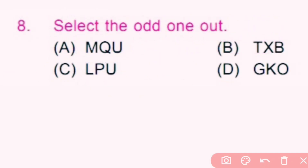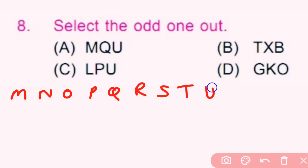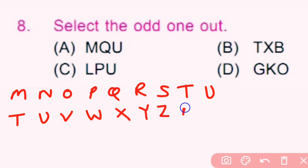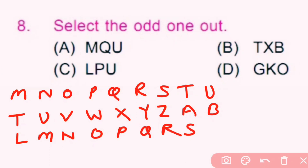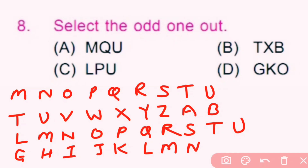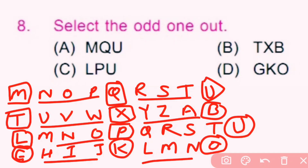Question number 8: Select the odd one out. Option A: M, Q, U — there are 3 letters between each. Option B: T, U, V, W, X, Y, Z — consecutive. Option C: L, M, N, O, P, Q, R, S, T, U — consecutive. Option D: G, H, I, J, K, I, J, K, L, M, N, O. In option C there are four letters between P and U, so option C is the odd one out. C is correct.